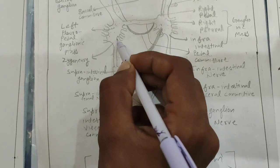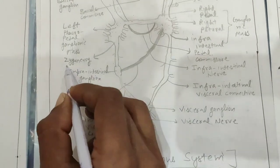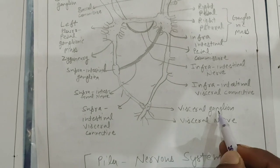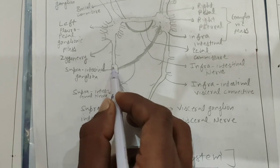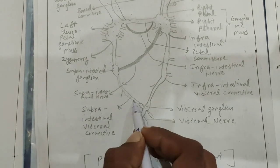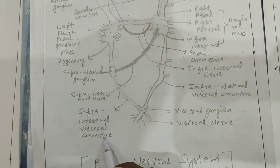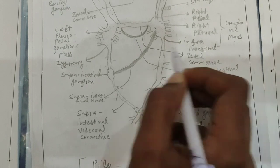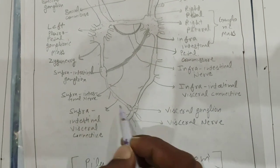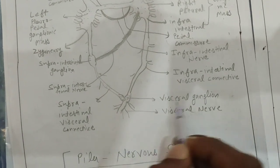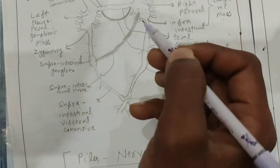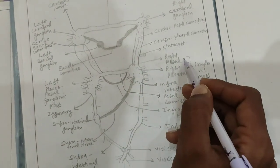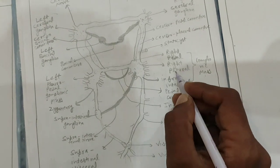The supraintestinal ganglion is attached with the pedal ganglion with the help of a connective named zygoneure. Below the supraintestinal ganglion, another ganglion is present, known as the visceral ganglion. The visceral ganglion and supraintestinal ganglion are different ganglia, attached by connectives named supraintestinal-visceral connectives. The supraintestinal ganglion also attaches with the infraintestinal ganglion via supraintestinal nerves. Nerves arising from the visceral ganglion are visceral nerves; those from the cerebral ganglion are cerebral nerves; those from the pedal ganglion are pedal nerves; and those from the pleural ganglion are pleural nerves.